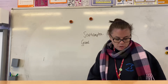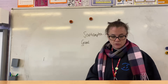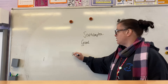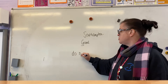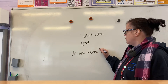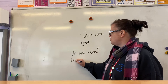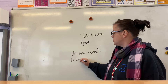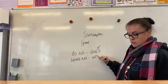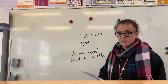Moving on. Contracted form. Those are words like do not, which becomes don't, using our apostrophe. Would not becomes wouldn't. Those are our contracted forms.